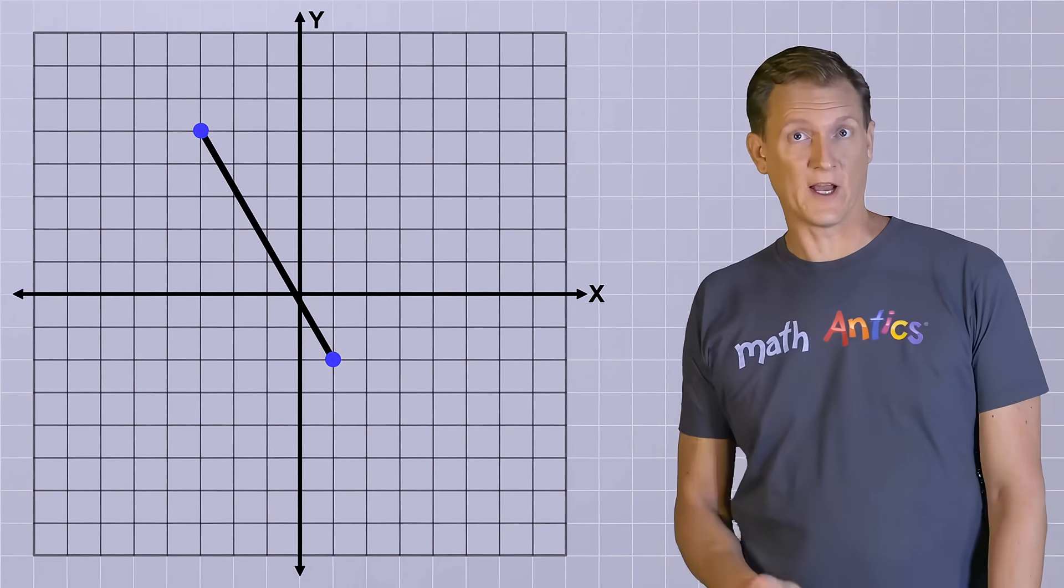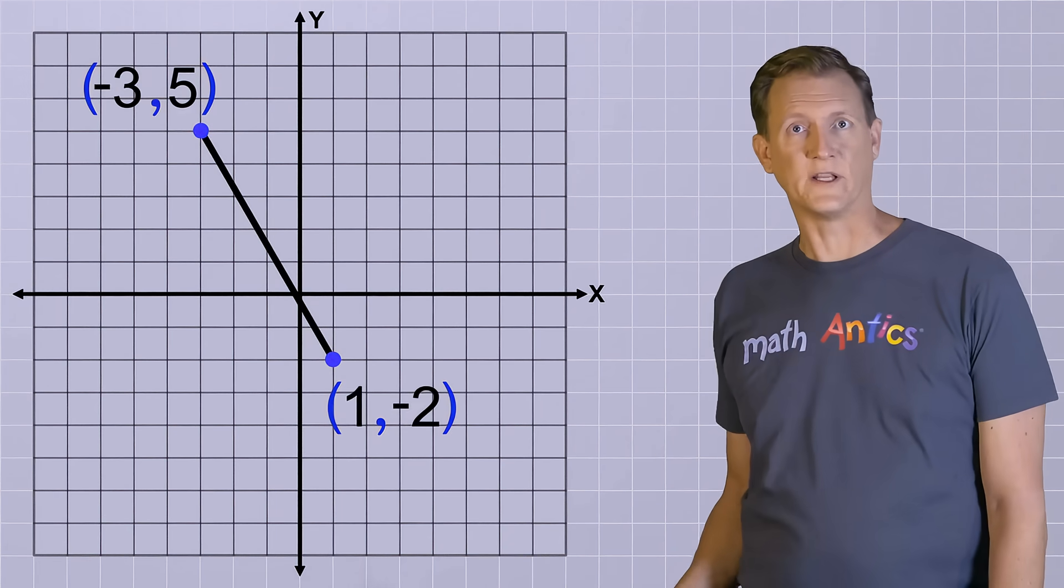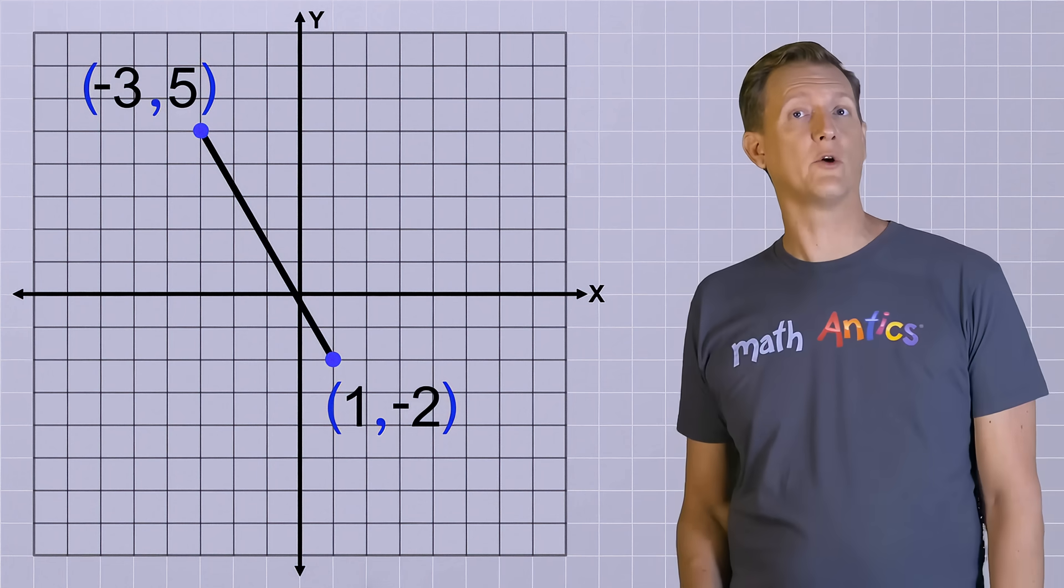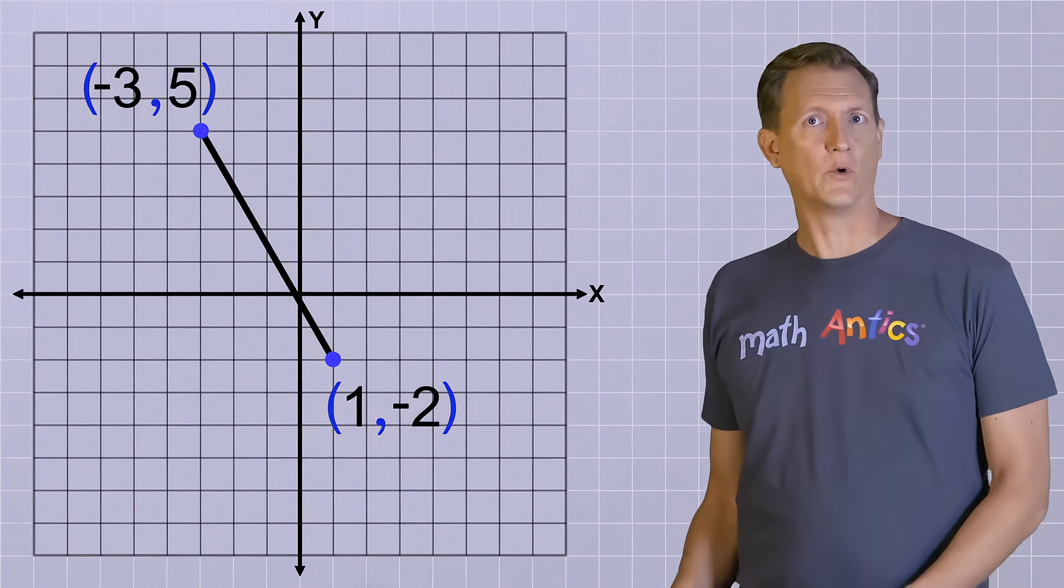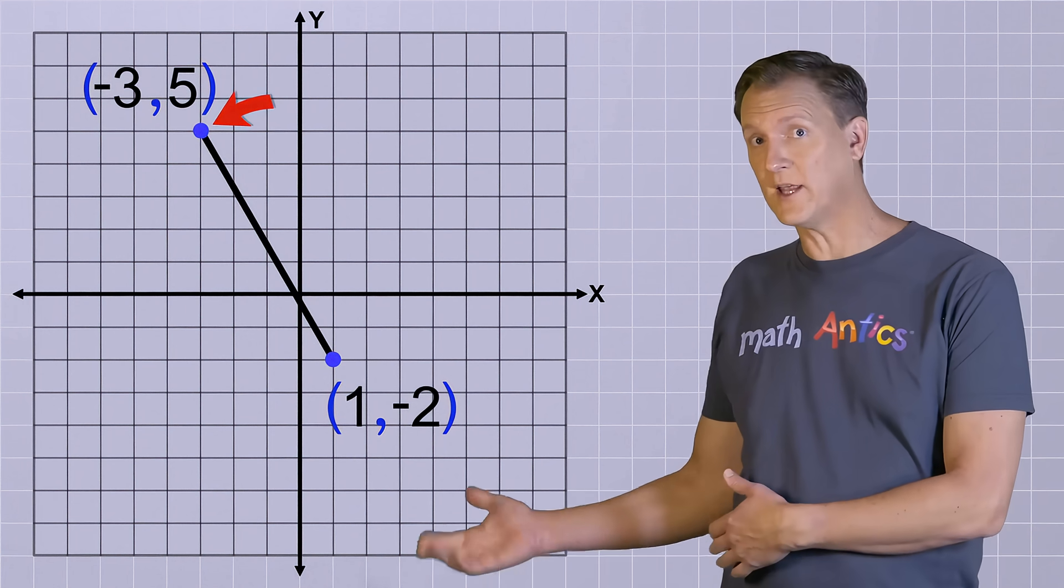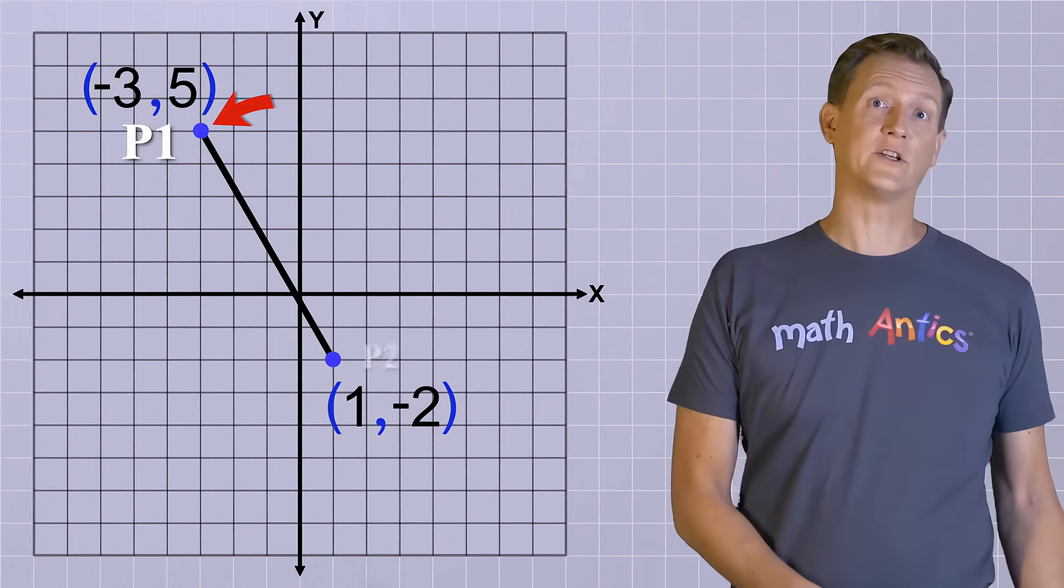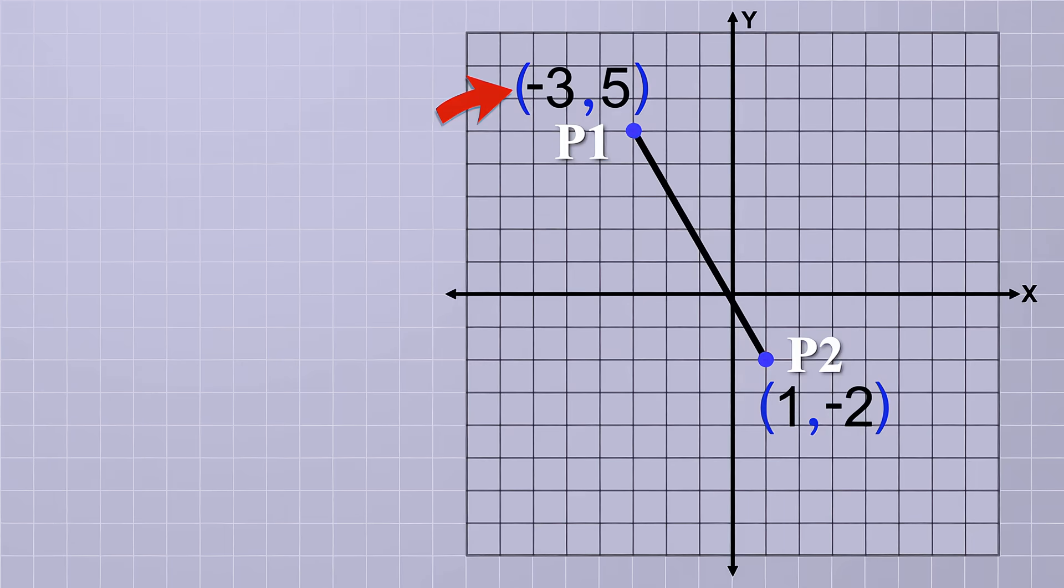That wasn't so bad, was it? But let's try one more example to make sure you've got it. Again, we're given two points, but this time they're already shown on the coordinate plane for us. We'll label this one that's furthest to the left, point 1, and the other one, point 2. That means this point's coordinates will be x1 and y1, and this point's coordinates will be x2 and y2.